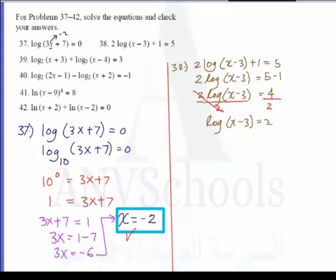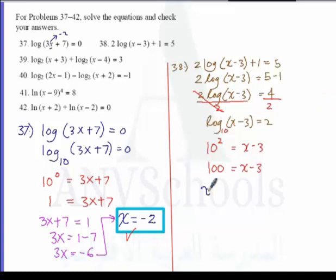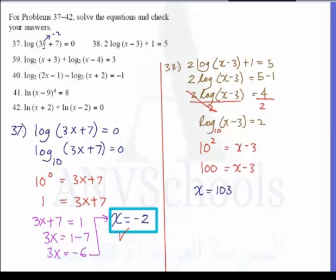Converting from logarithmic to exponential form — since this is a common logarithm with base 10 — gives 10 raised to 2 equals x minus 3. So 100 equals x minus 3, therefore x equals 103. To check, we substitute 103 into the original equation: 2 log of 103 minus 3 gives 2 log of 100 plus 1, which equals 5. This is a valid solution.